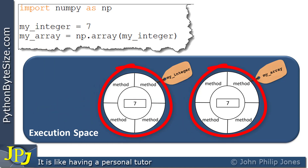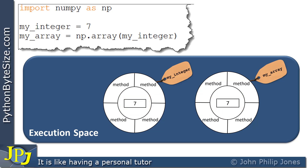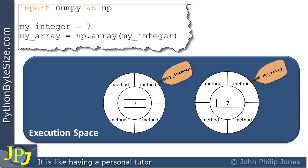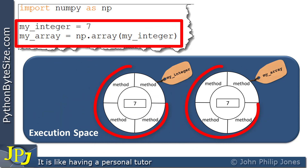The diagram is useful but doesn't tell us everything. If you look at these objects, they look pretty much the same — they've both got methods, and at the core they both have the value of 7. But we need to appreciate that this object is based on the integer class, and this object is based on the ndarray class. So these methods will be different. The ndarray instance has lots of methods that are good for mathematical work, which we'll be looking at as this playlist continues.